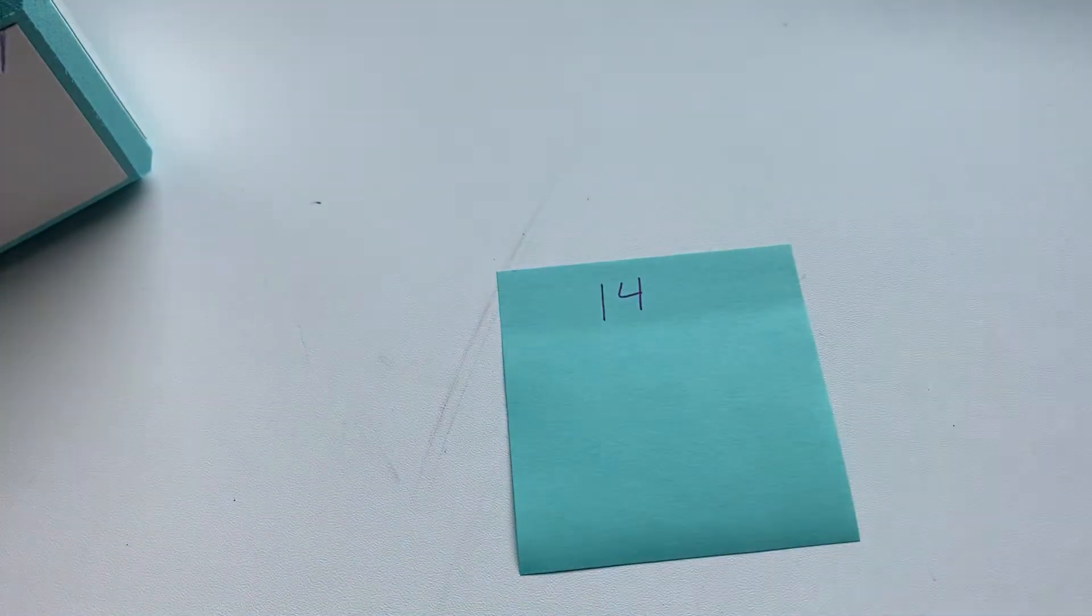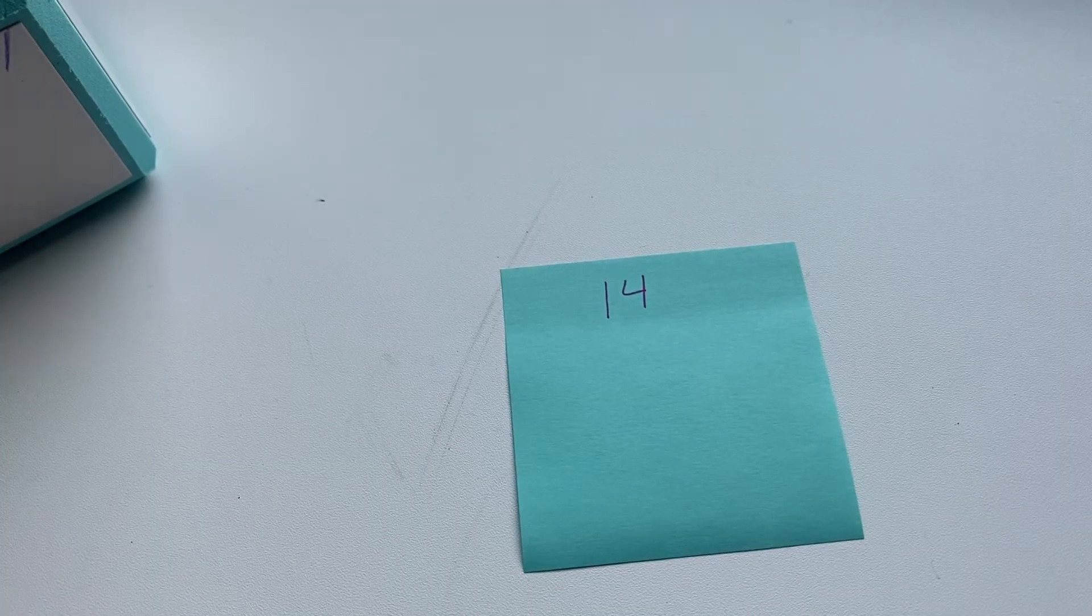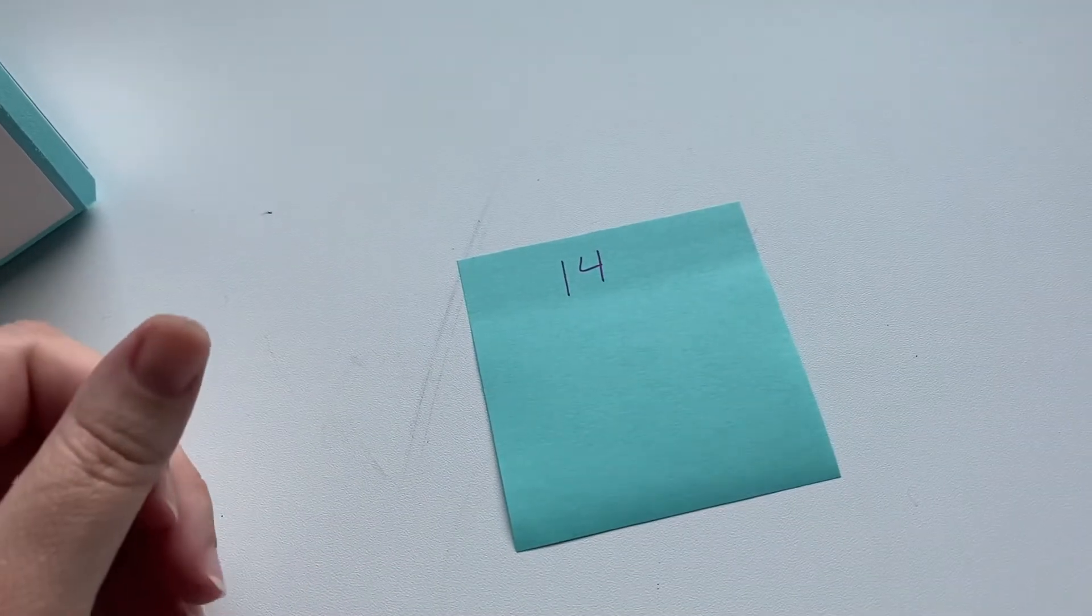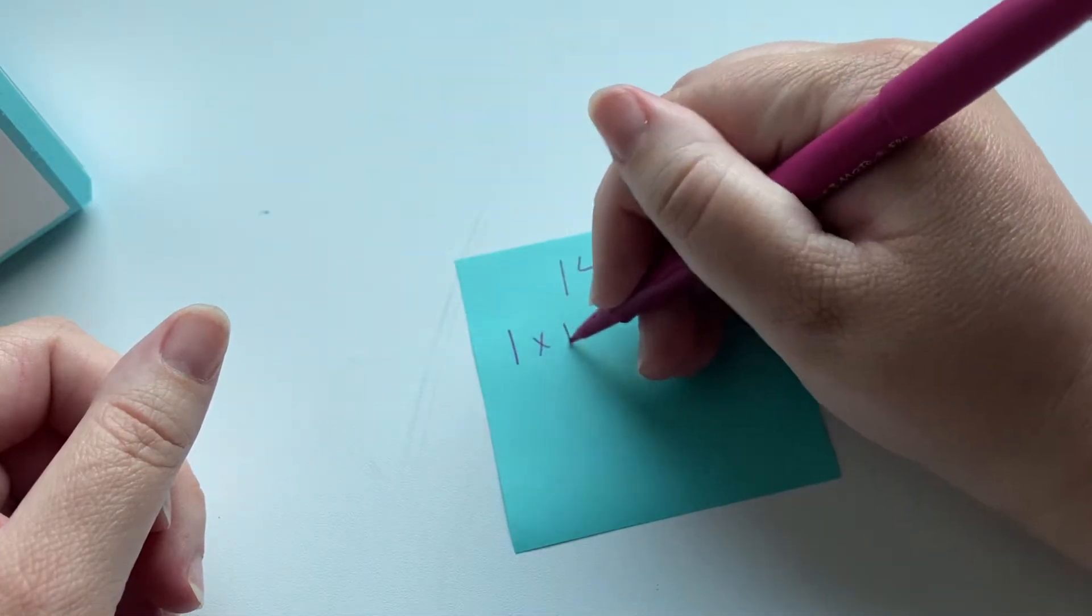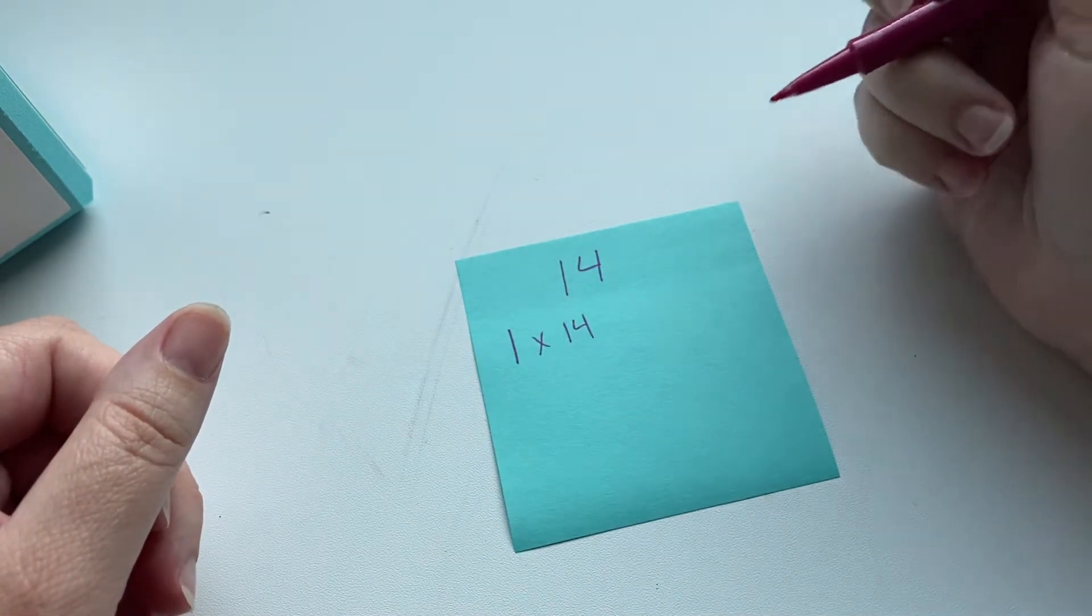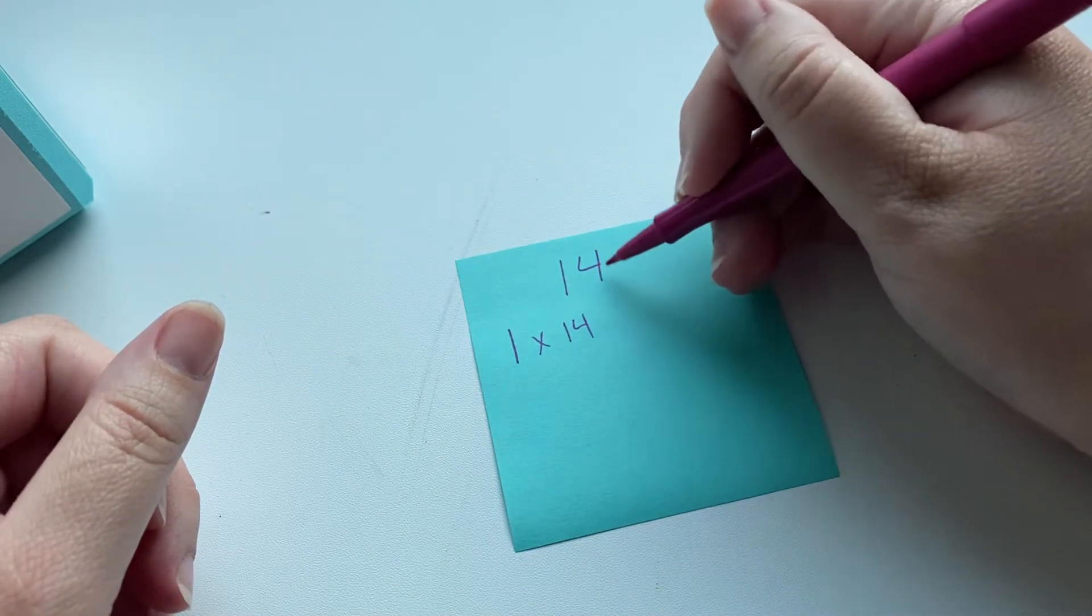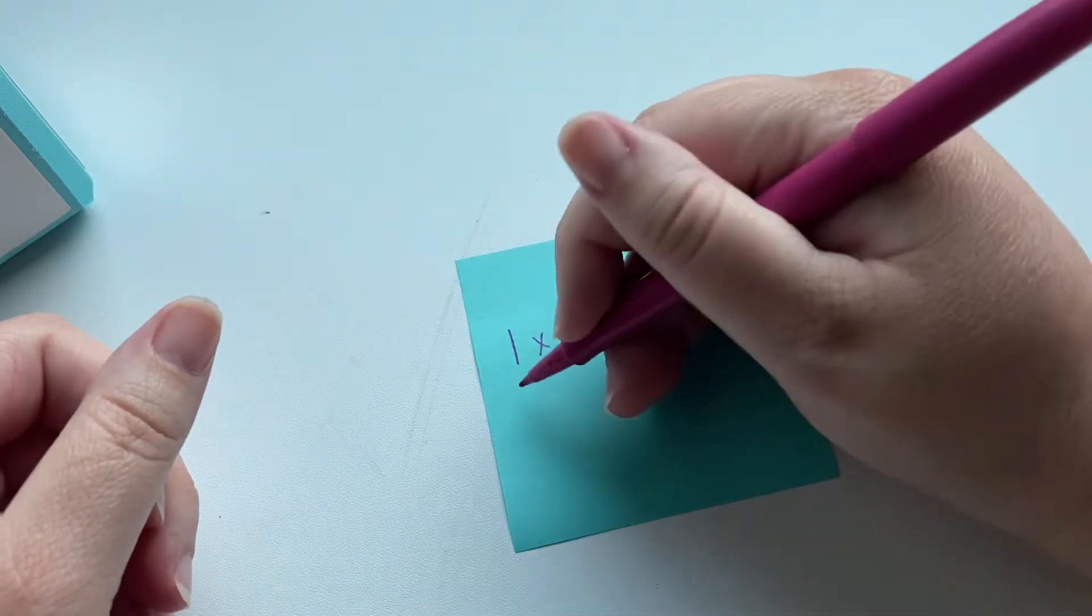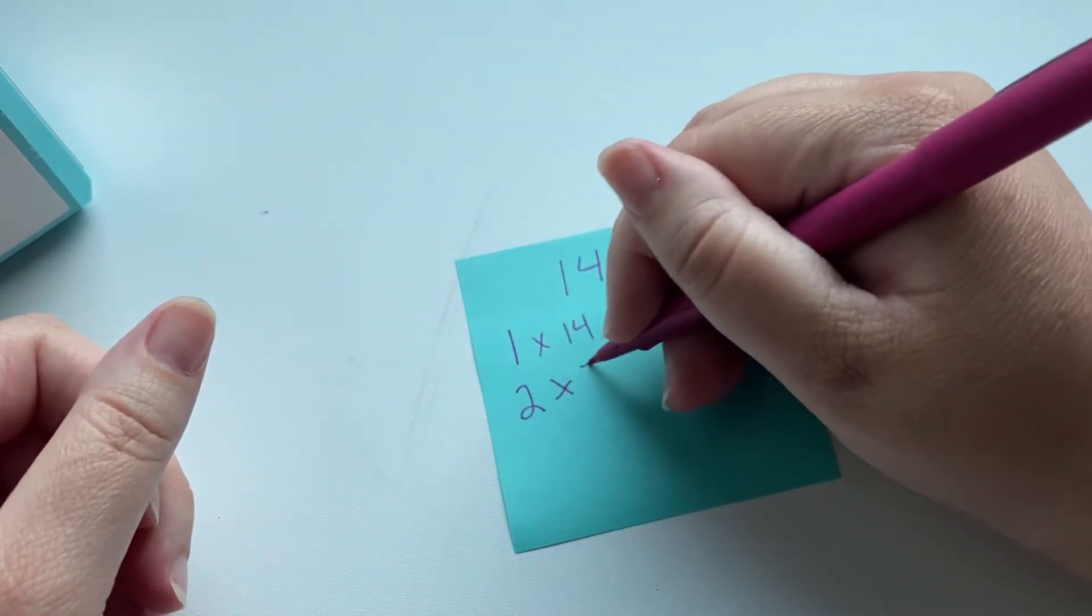So let's start with the number 14. With the number 14, if we talk about what can go into 14, we always know that 1 times 14 goes into 14. I always would check after that with 2, and if it's an even number, which means it ends in 0, 2, 4, 6, or 8, then 2 can go into it. So 2 times 7.